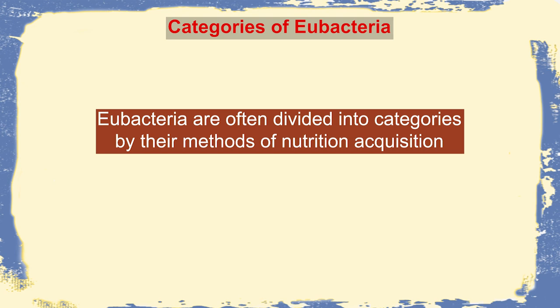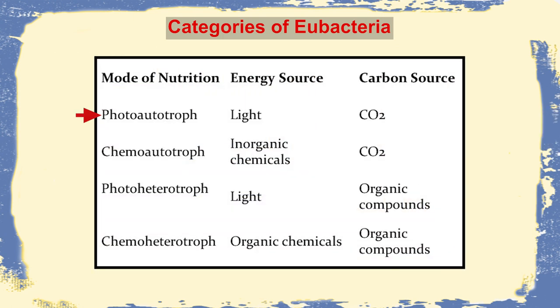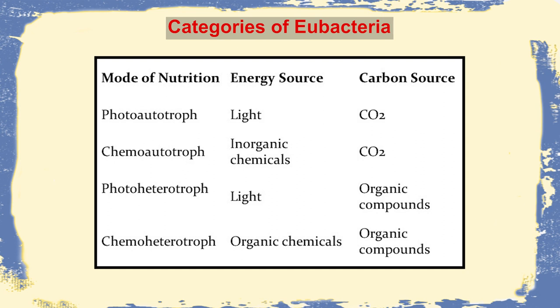Eubacteria can also be classified by their mode of nutrition acquisition into four categories: photo-autotrophs, which use light as energy and carbon dioxide as carbon source; chemo-autotrophs, which use inorganic compounds as energy and carbon dioxide as carbon source; photo-heterotrophs; and chemo-heterotrophs, which use inorganic chemicals as energy source and organic compounds as their carbon source.